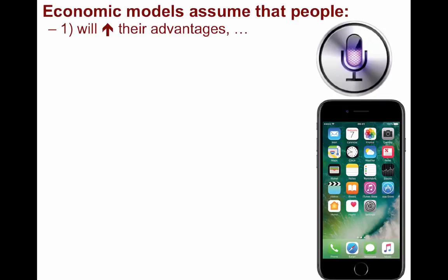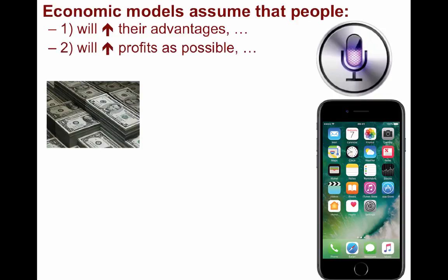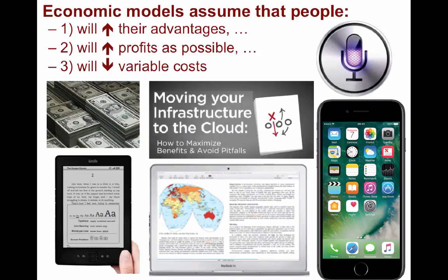This is an example of horizontal integration. A second assumption is that people, or firms, will want to increase their profits as much as possible. While this may seem obvious, some are certainly more successful at this than others. Finally, we need to assume that people will work to minimize variable costs — things such as energy, transportation, labor, and tax rates.